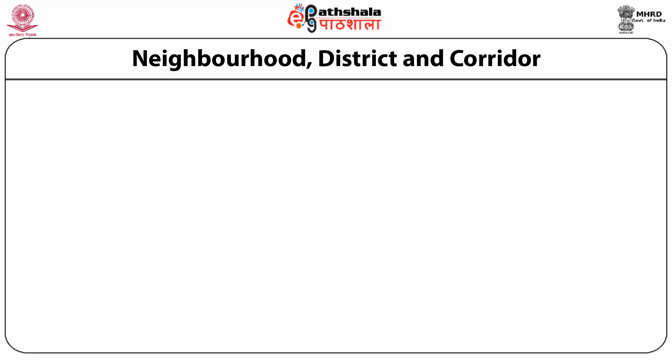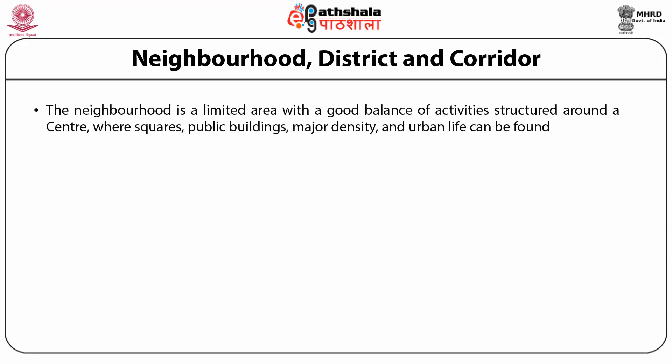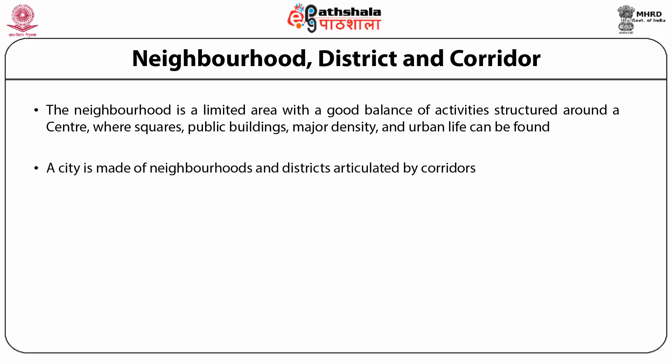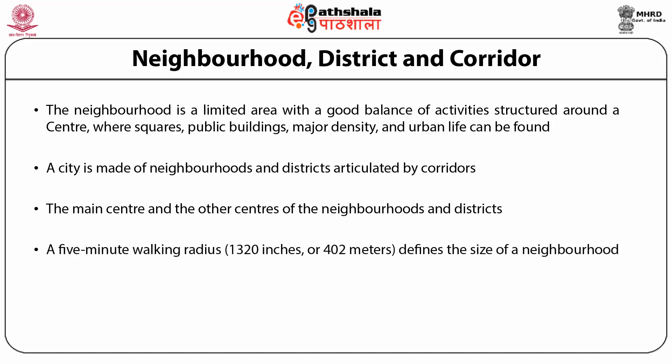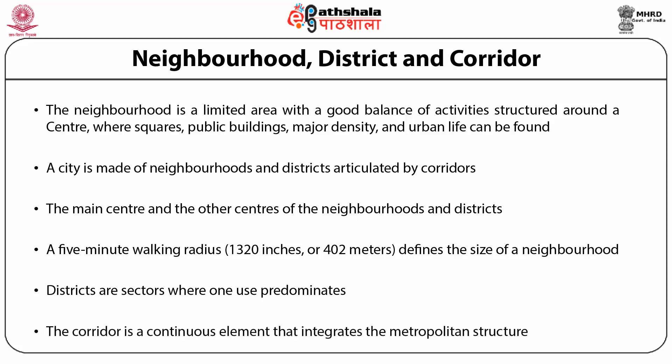Neighborhood, District, and Corridor: The neighborhood is a limited area with a good balance of activities structured around a center where squares, public buildings, major density, and urban life can be found. A city is made of neighborhoods and districts articulated by corridors. A 5-minute walking gradient — 1,320 feet or 402 meters — defines the size of a neighborhood. Districts are sectors where one use predominates. The corridor is a continuous element such as a great avenue or a park that integrates and articulates the metropolitan structure.